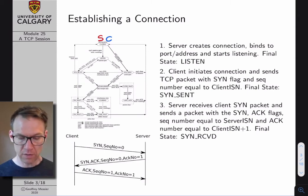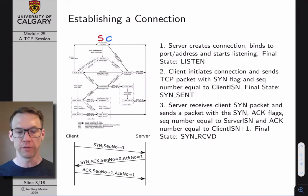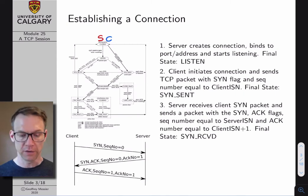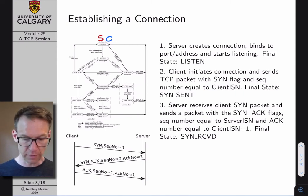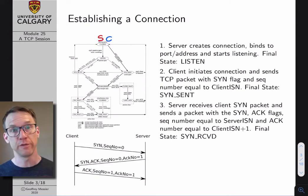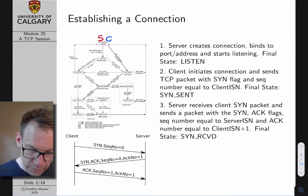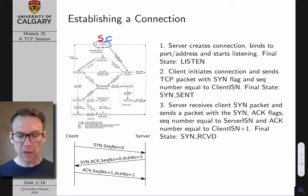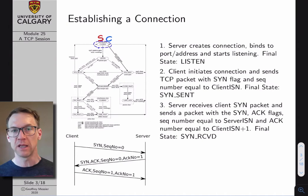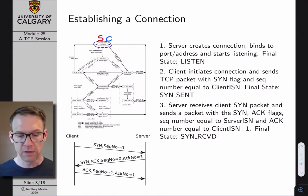I'm going to use the red S to represent the current state of the server, and the blue C to represent the current state of the client. At the start of the example, both the server and the client are in the closed state. If it's too small to see, print yourself out a larger picture of the TCP state machine diagram so you can follow along.